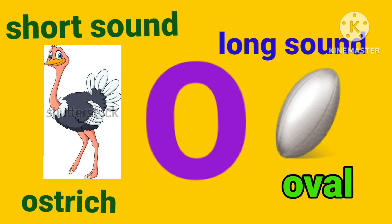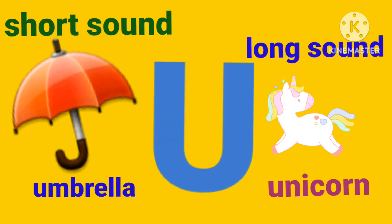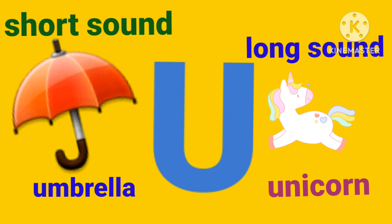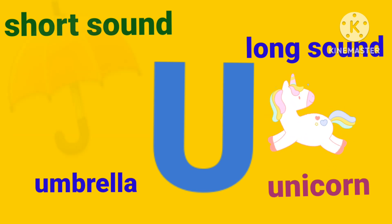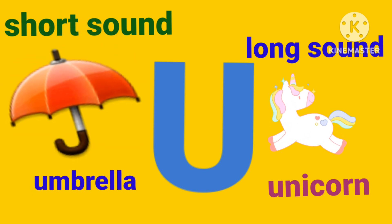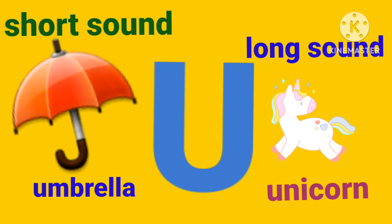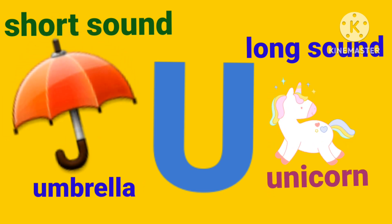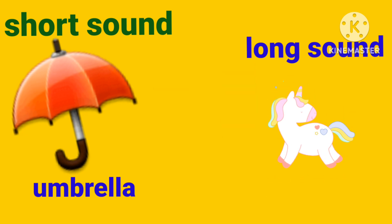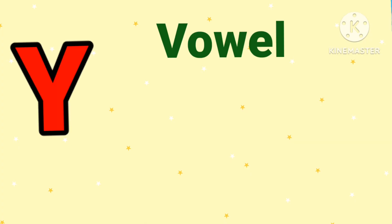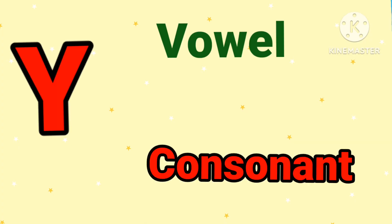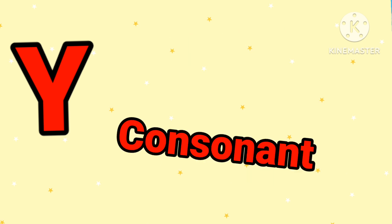Letter U — letter U has two sounds: short sound and long sound. Short sound: 'uh, uh' as in umbrella. And long sound: 'U, U' as in unicorn. Let us see how letter Y acts as a vowel and a consonant.